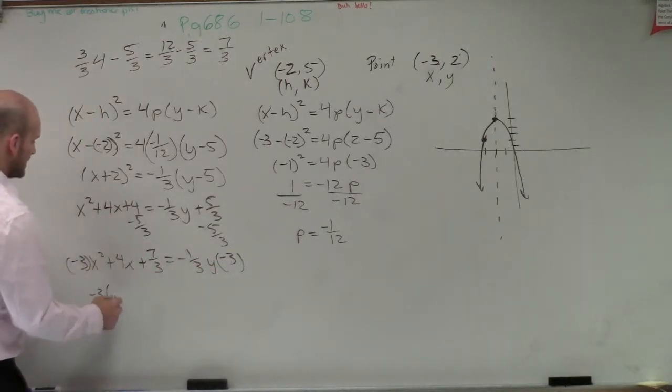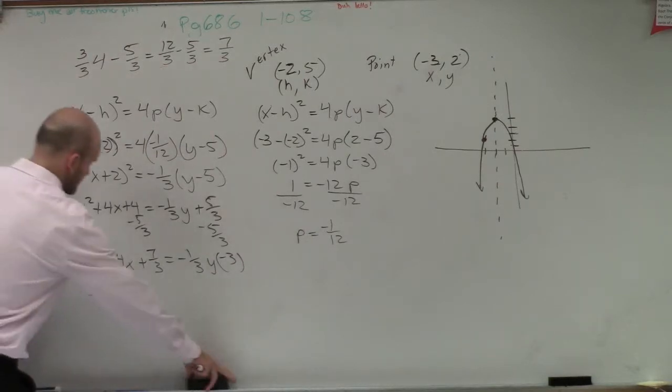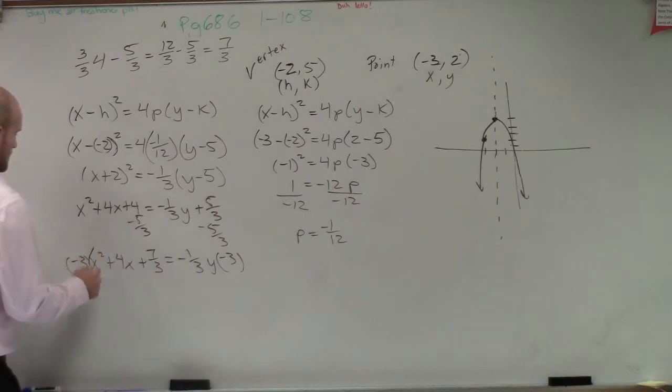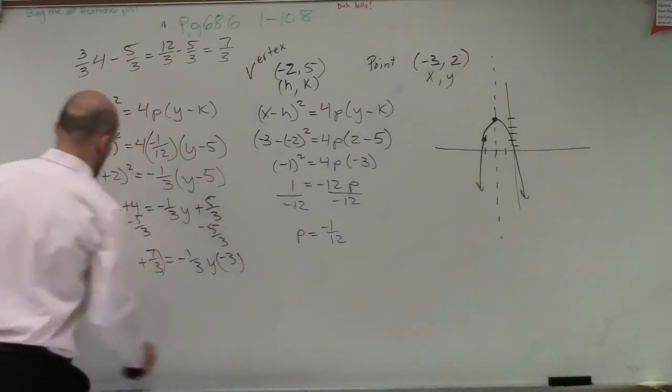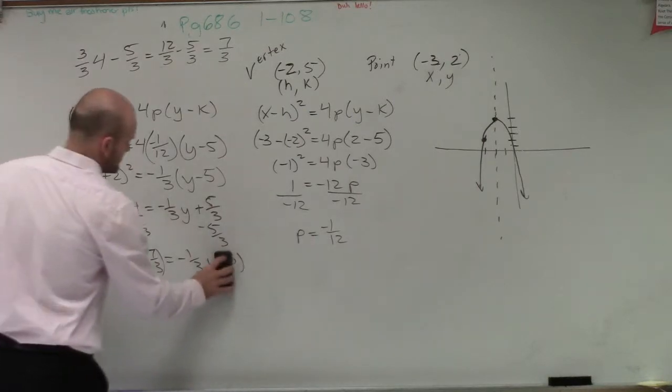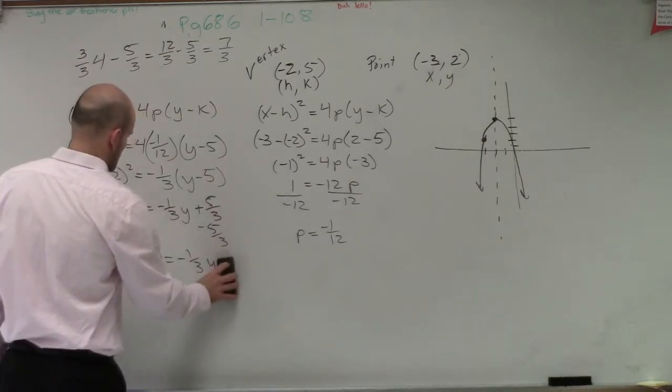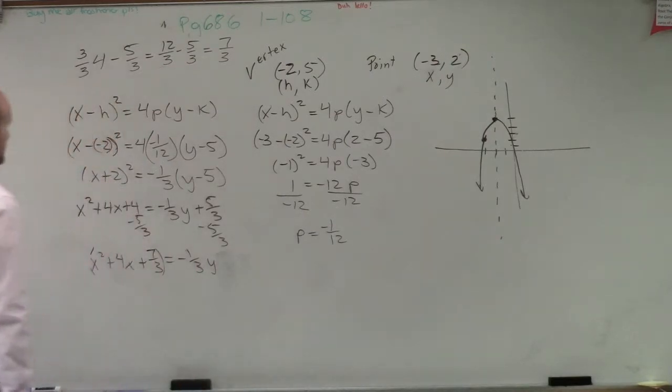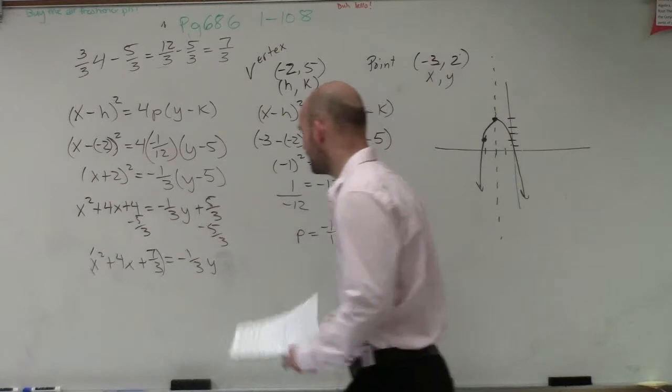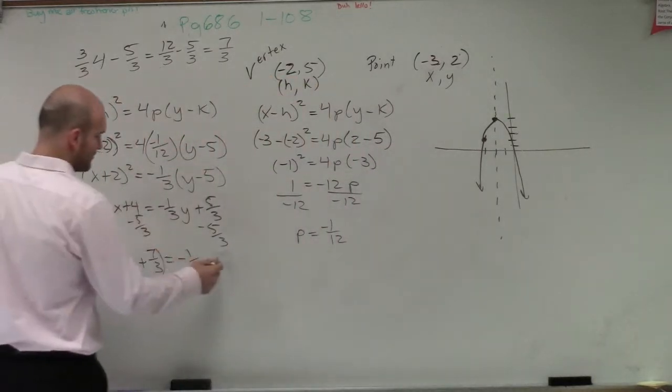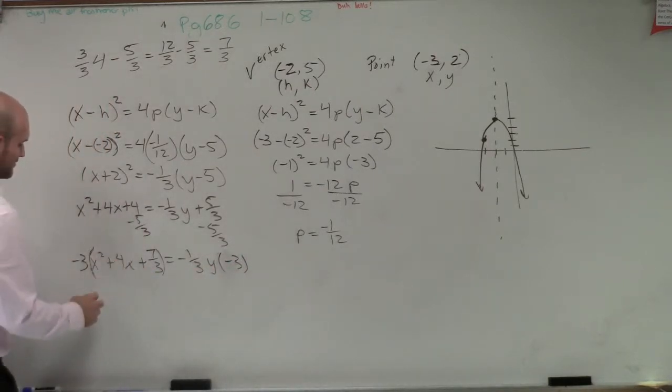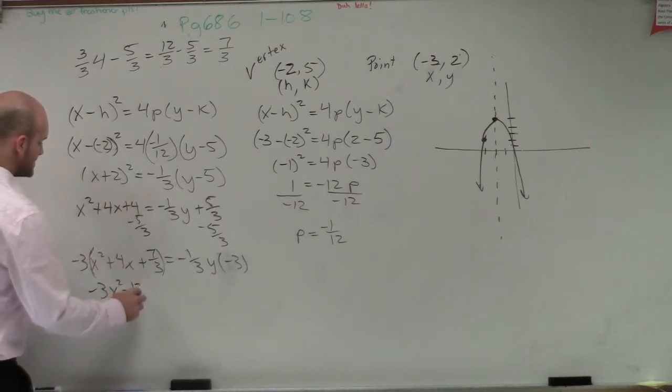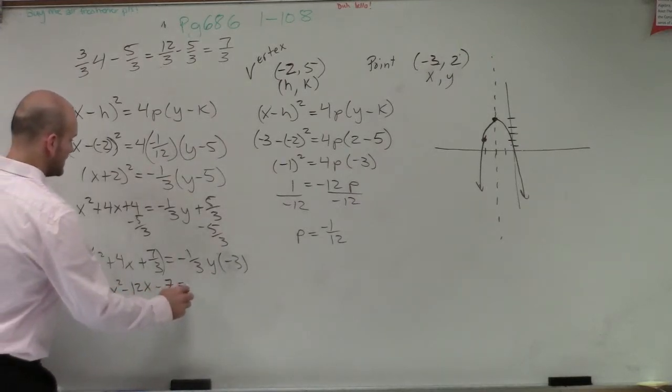And then you'd multiply by negative 3 on both sides. So your final answer, you could write as, let's write that out, negative 3x squared. I'm solving for y, for some reason. Yeah, you would multiply by negative 3. I was right. So therefore, your final answer would be negative 3x squared minus 12x minus 7 equals y.